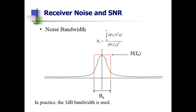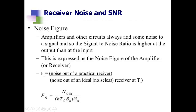The noise power in practical receivers is actually greater than thermal noise alone, due to thermal agitation of the conduction electrons. Moving to the next topic: noise figure. Noise figure should always be minimized when designing any receiver — this is typically checked in LNAs. Noise figure is the measure of noise power output of a real receiver relative to that of an ideal receiver with only thermal noise.